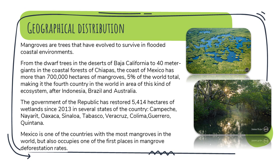The government has restored 5,414 hectares of wetlands since 2013 in several states of the country: Campeche, Nayarit, Oaxaca, Sinaloa, Tabasco, Veracruz, Colima, Guerrero, and Quintana. Mexico is one of the countries with the most mangroves in the world, but also occupies one of the first places in mangrove deforestation rates.